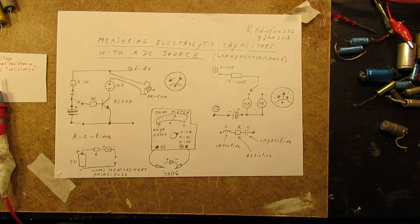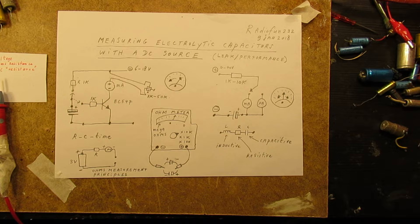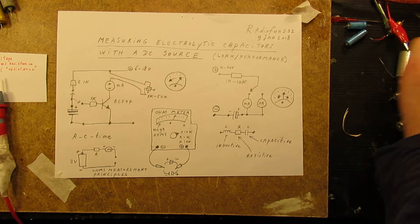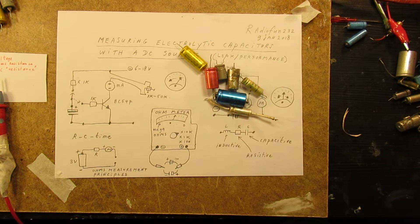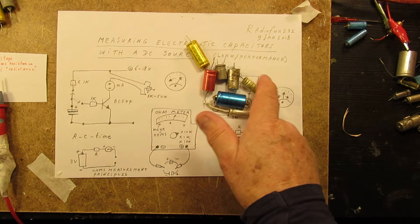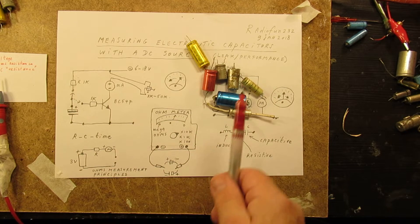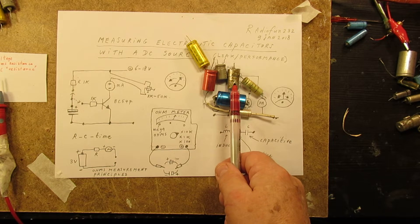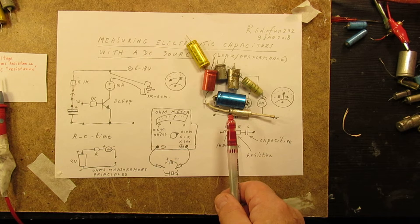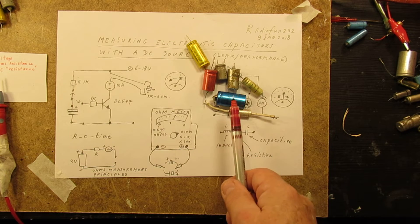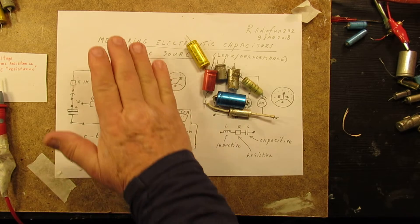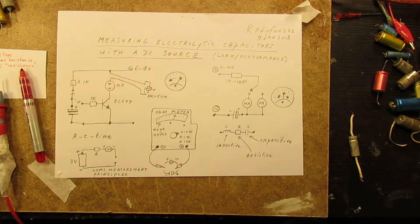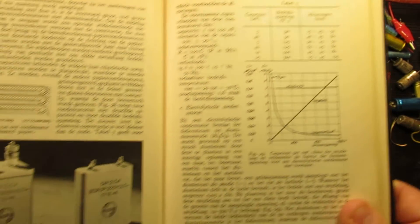This is a video about electrolytic capacitors and how to measure the leak inside such a capacitor. I tested all these capacitors a few days ago and threw them all away. The most important thing is that there is a too high DC resistance between the electrodes of that electrolytic capacitor, and that in relation to the voltage. I will explain that later.